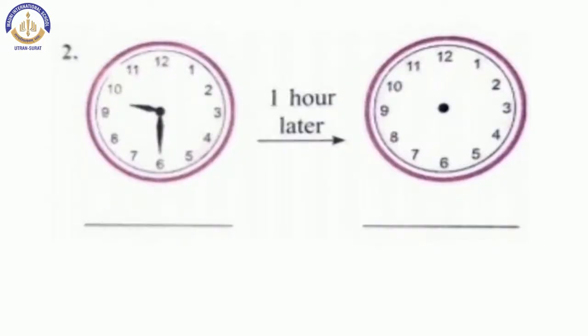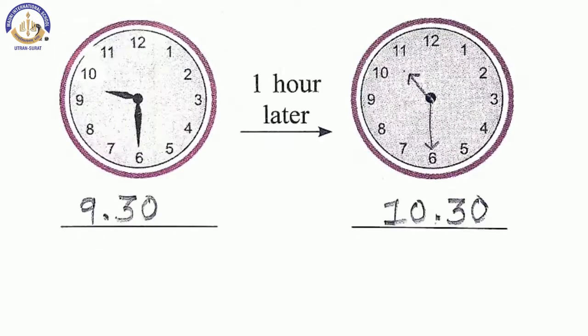Now, second one. Here, the minute hand is on six and our hand is between nine and ten so our time will be nine point thirty and after one hour our time will be ten point thirty right? So, draw the hands like this here is nine point thirty.